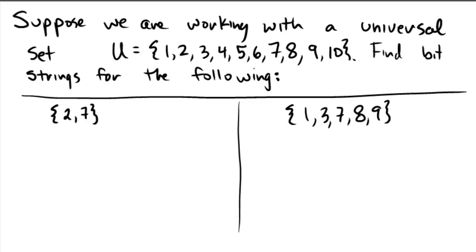These are very useful in computer science. So suppose we are working with a universal set U = {1, 2, 3, 4, 5, 6, 7, 8, 9, 10}. Find bit strings for the following.